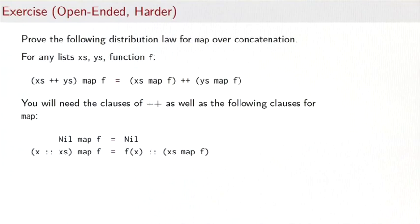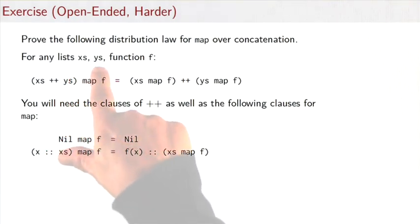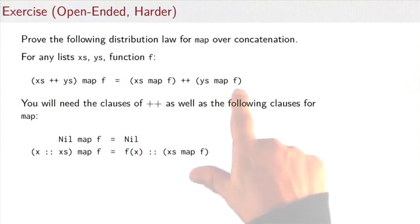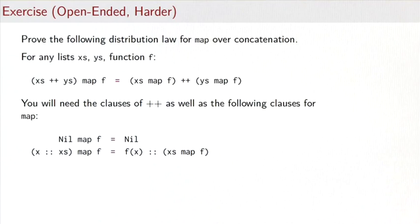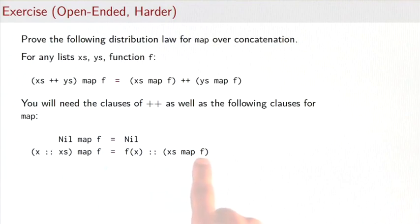We finish with an exercise: prove that map distributes over concat. For any lists xs, ys, and function f, (xs followed by ys).map(f) is the same as xs.map(f) followed by ys.map(f). You'll need the clauses for ++ and two clauses for map: mapping over the empty list gives the empty list, and mapping f over (x followed by xs) gives f(x) followed by the result of mapping f over xs.